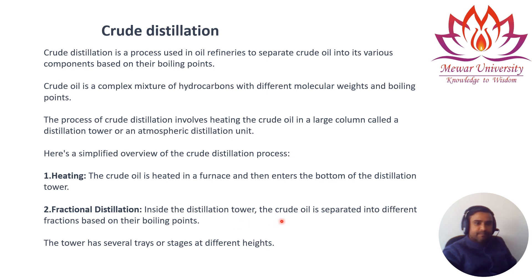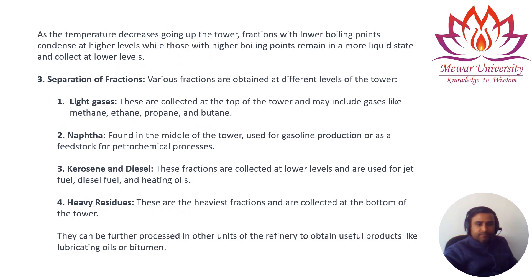Inside the distillation tower, the crude oil is separated into different fractions based on their boiling points. The tower has several trays or stages at different heights. Based on their boiling points, the steam of the components travels up and cools down at their different boiling ranges, getting collected at a particular tray.